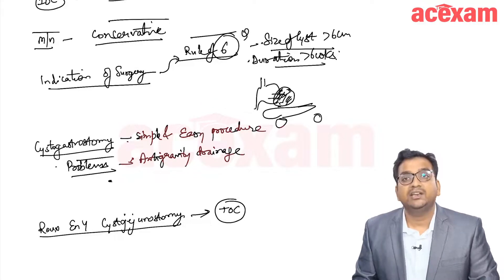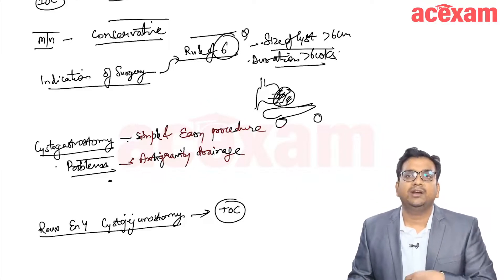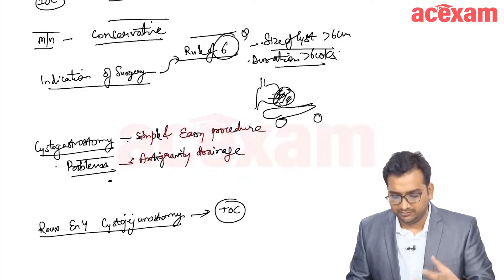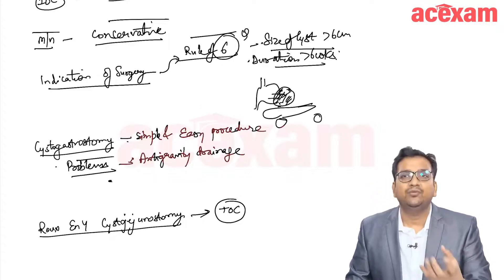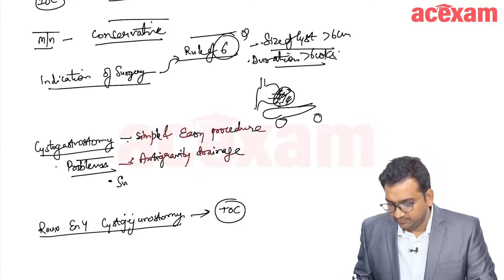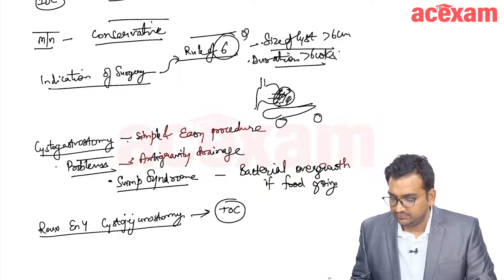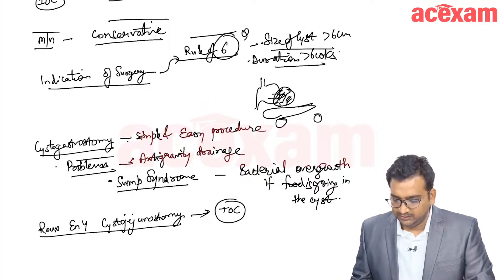Sometimes, in case if the food is going into the cyst, then this can lead to sump syndrome and there will be infection in the cyst due to this retained food material and there will be bacterial overgrowth. Sump syndrome occurs with bacterial overgrowth if food is going in the cyst.